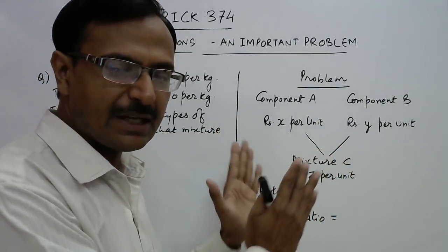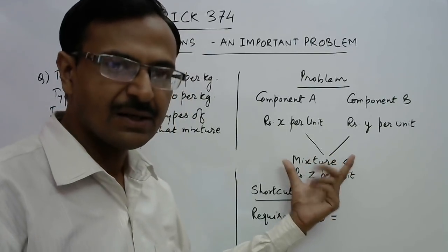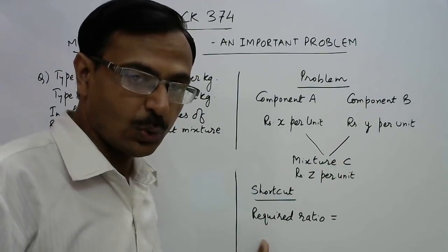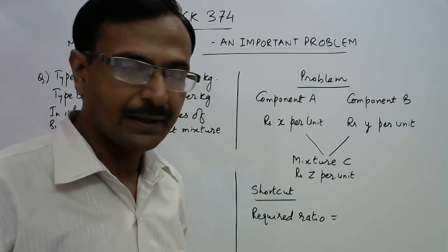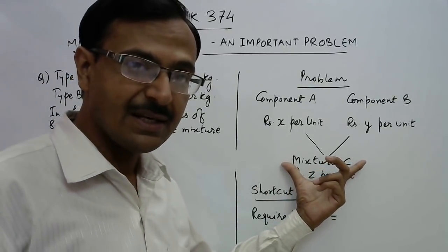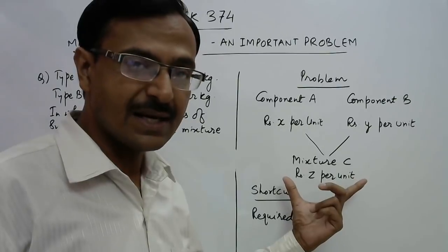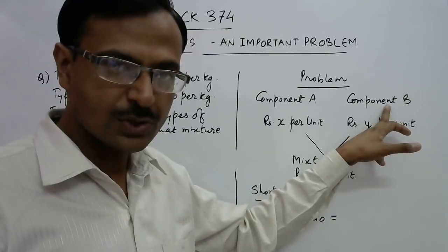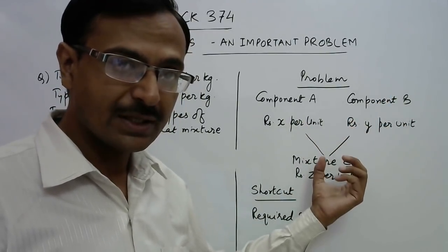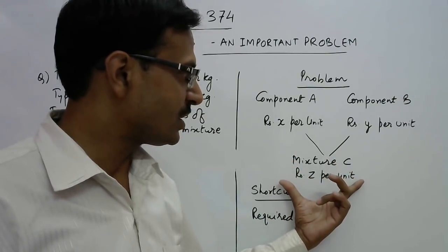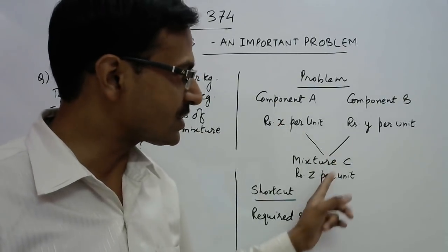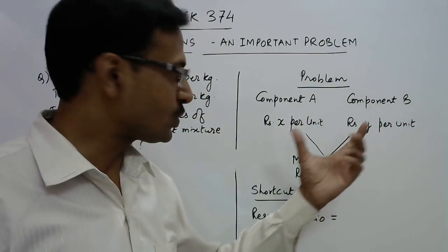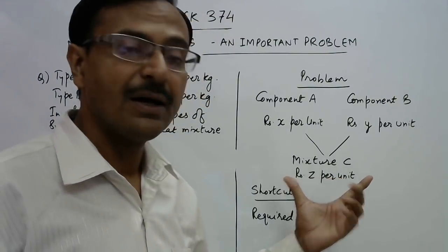We need to mix them in a particular ratio and produce a mixture C of the two components A and B. We need to find that ratio in which A and B are to be mixed so that the cost of the mixture C should be rupees z per unit. So independently component A costs rupees x per unit, component B costs rupees y per unit, but when mixed together in a particular ratio the mixture C costs rupees z per unit.